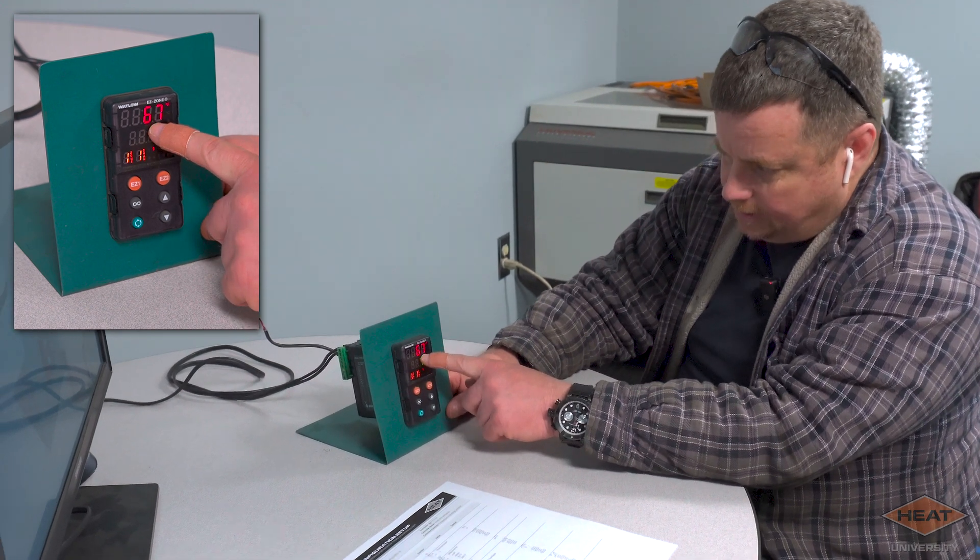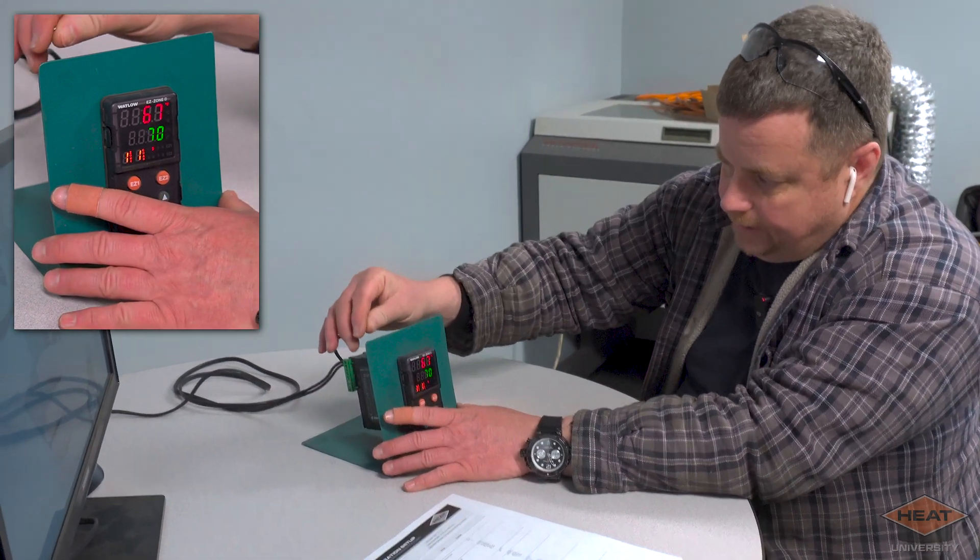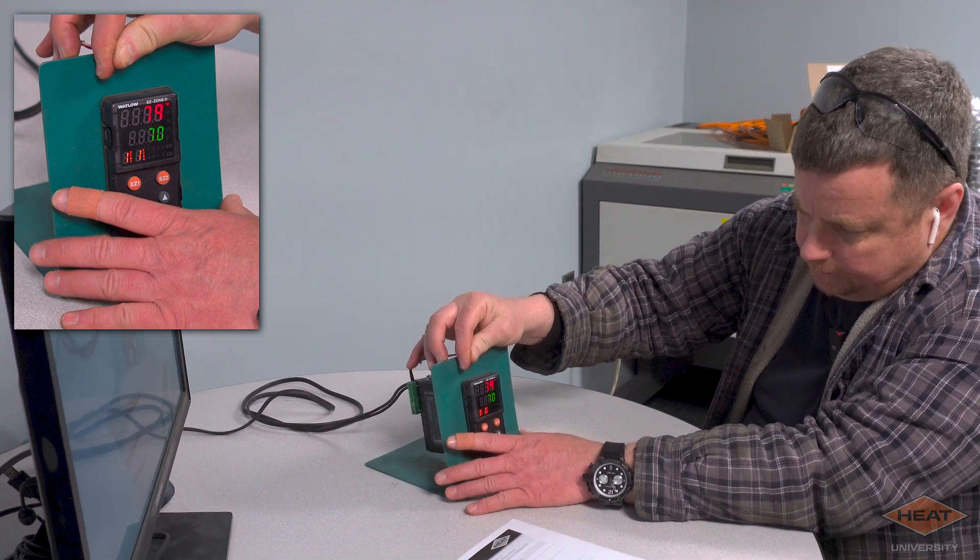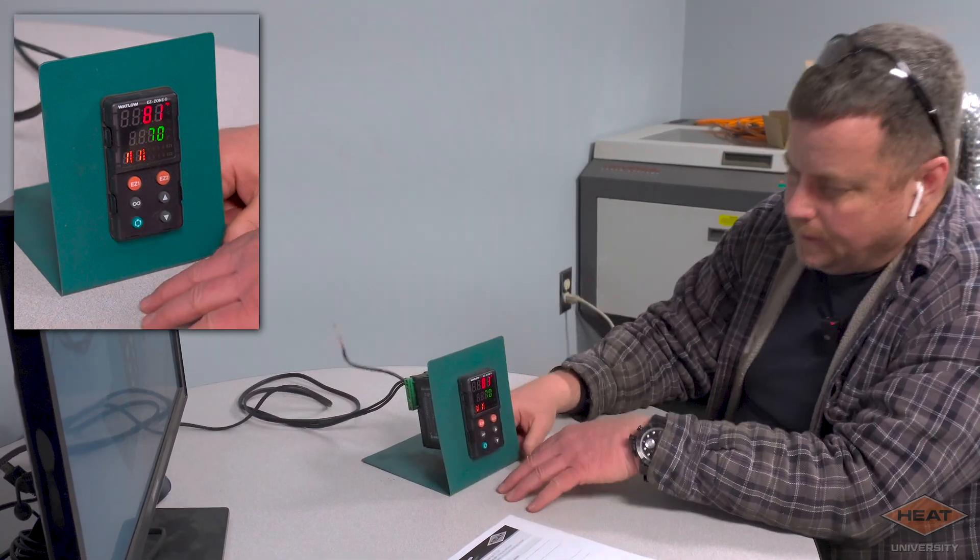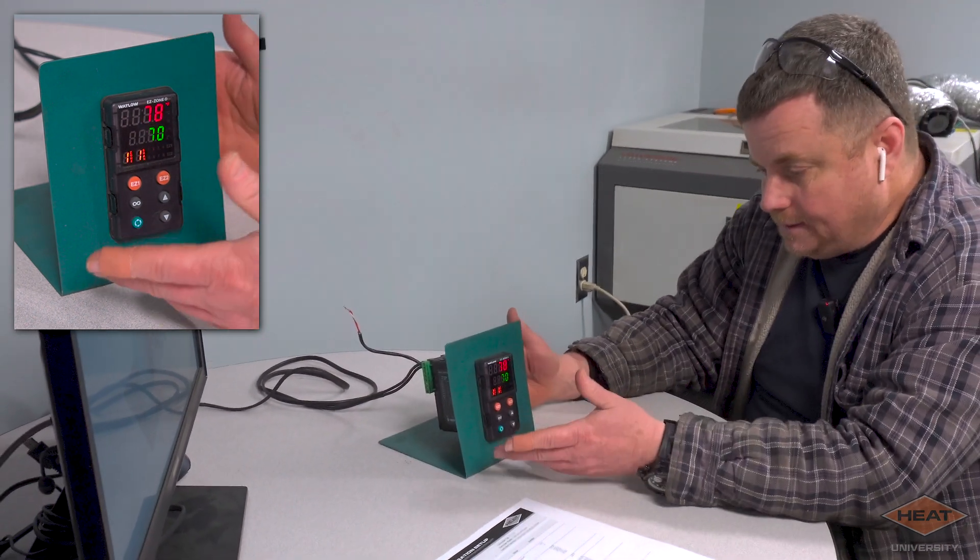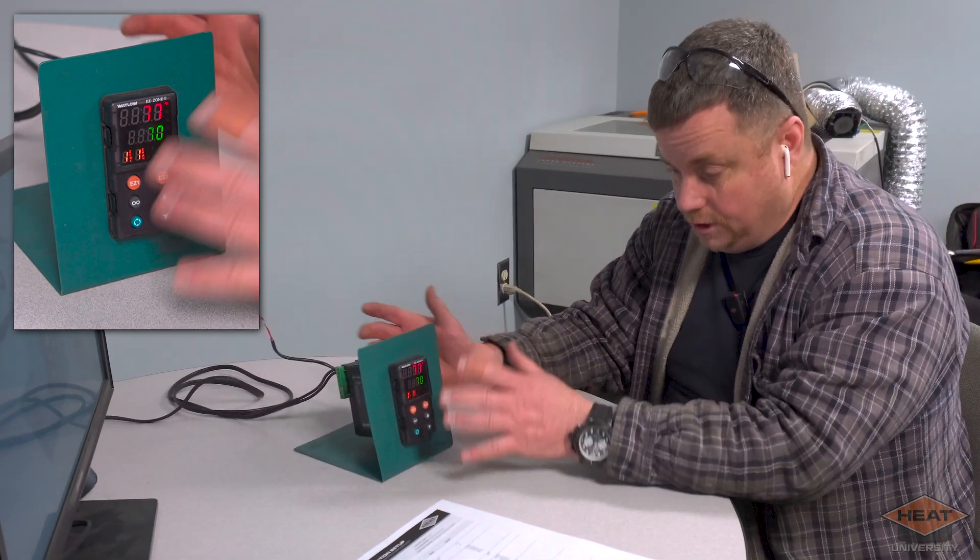The lower number is our set point. This is our current temperature as read in the thing. And so when I put my fingers on this, you can see it gets warmer. Then I'll let it go and it'll start to cool off. And that's basically the setup for a typical just heat controller.